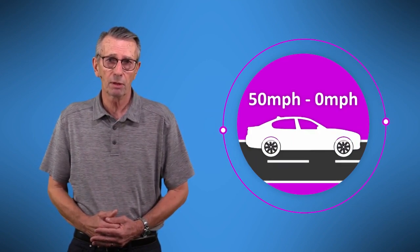For example, an airbag expands and then depresses as a body strikes it, slowing the person from 50 to zero miles per hour over a longer time.